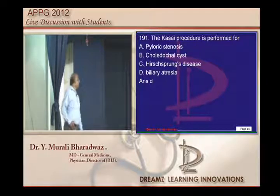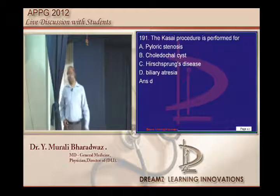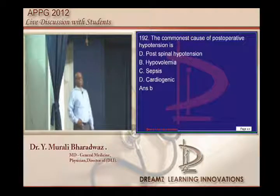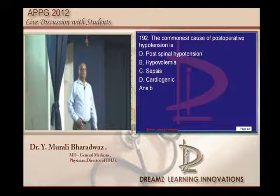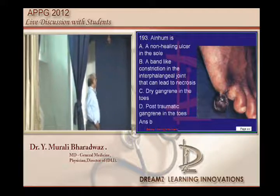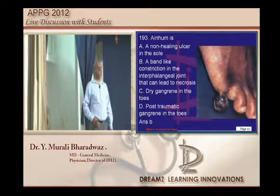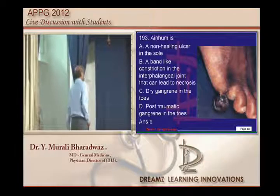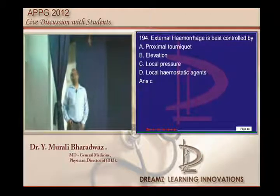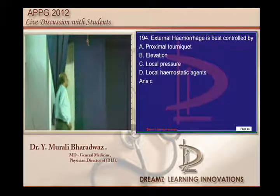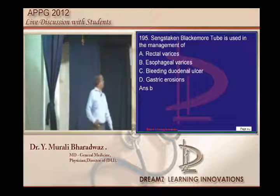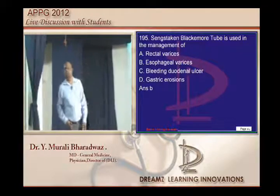The Kasai procedure — hepatoportoenterostomy — is done for biliary atresia. The most common cause of postoperative hypotension is hypovolemia. AINHUM is that band of constriction of the interphalangeal joint. Local pressure is the best way to control external hemorrhage. The Sengstaken-Blakemore tube is used for esophageal variceal control in portal hypertension.